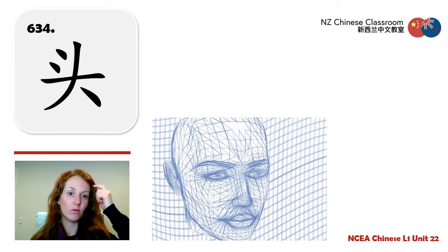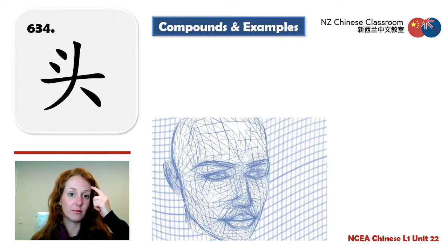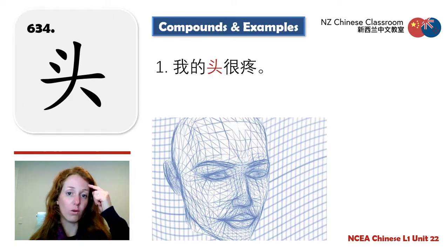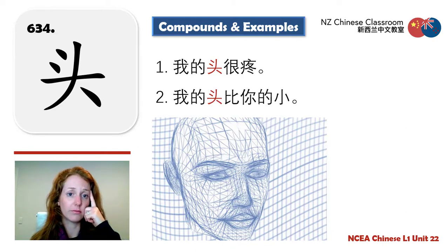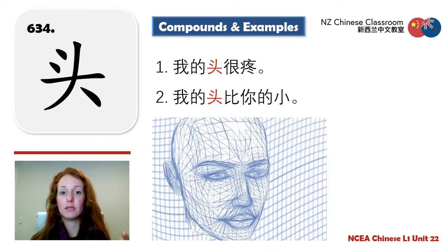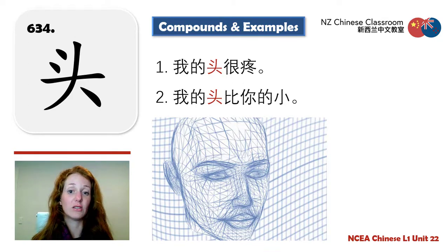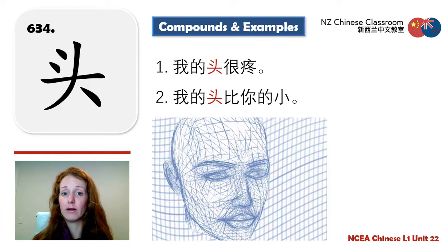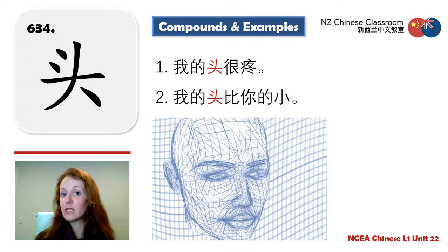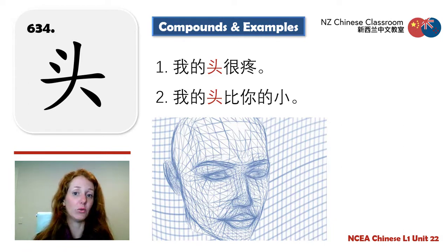头 — head. Example: 我的头很疼 — My head is very sore. Example using comparison: 我的头比你的小 — My head is smaller than yours. We could say 比你的头小, but since we know we're talking about 头, we can just say 你的.